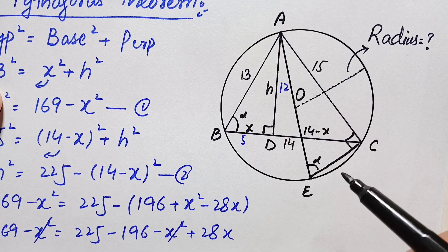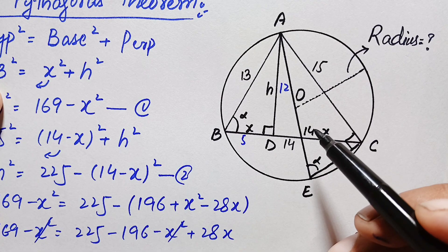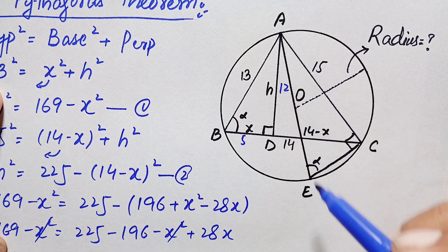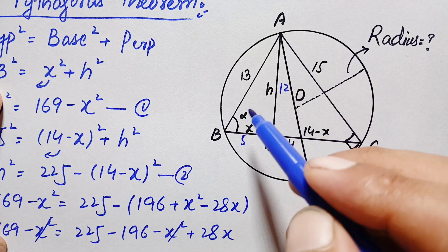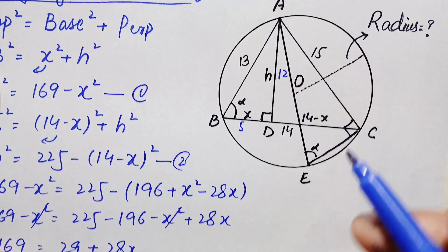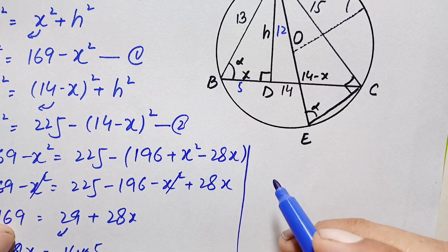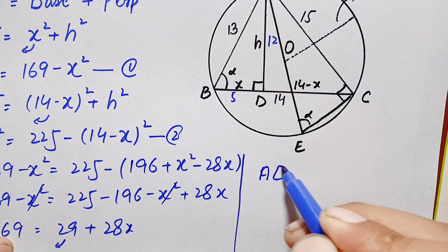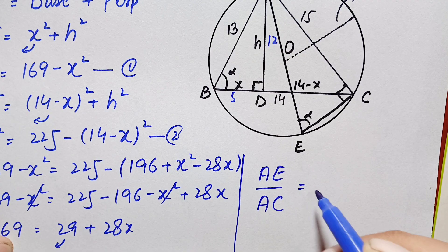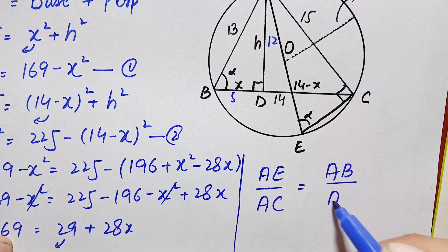In similar triangles, the ratios of corresponding sides are always proportional. Taking the ratio of hypotenuse to perpendicular for each triangle: the hypotenuse of triangle AEC is AE and perpendicular is AC; for triangle ABD the hypotenuse is AB and perpendicular is AD. So: AE / AC = AB / AD.